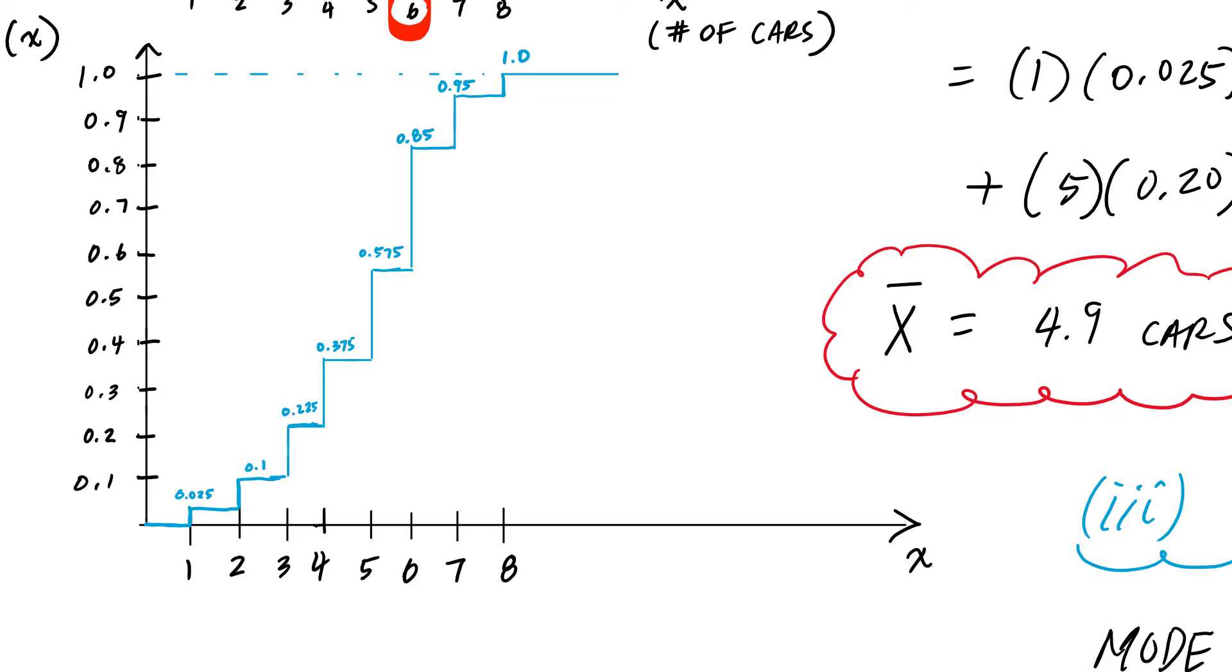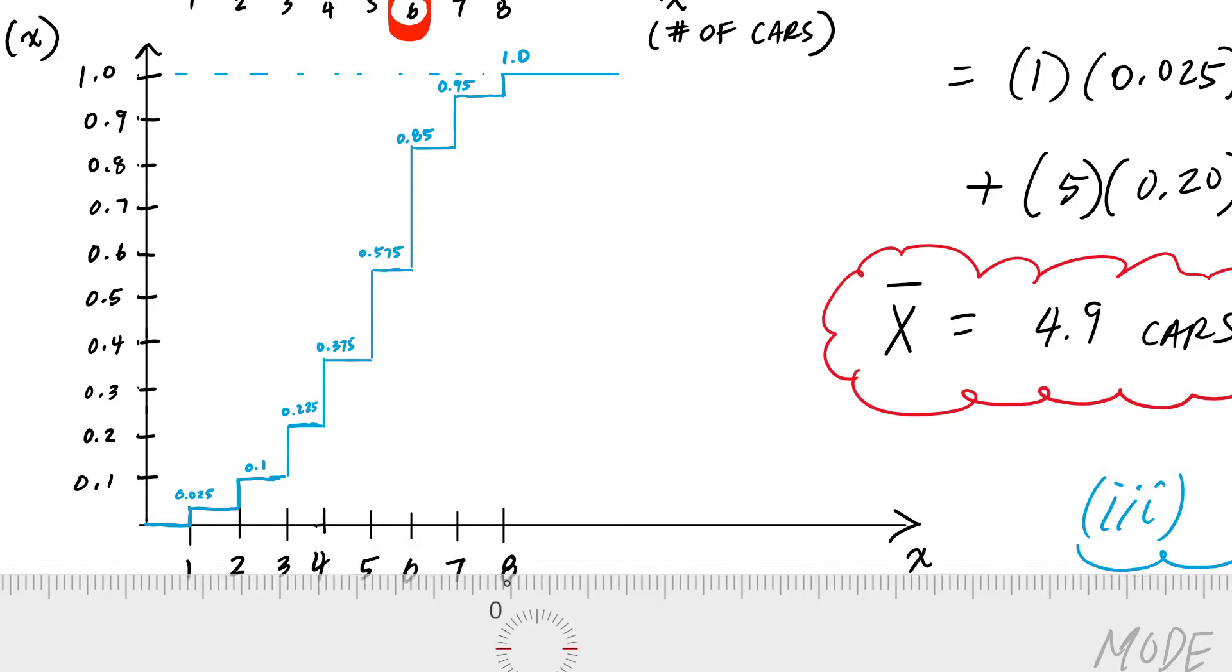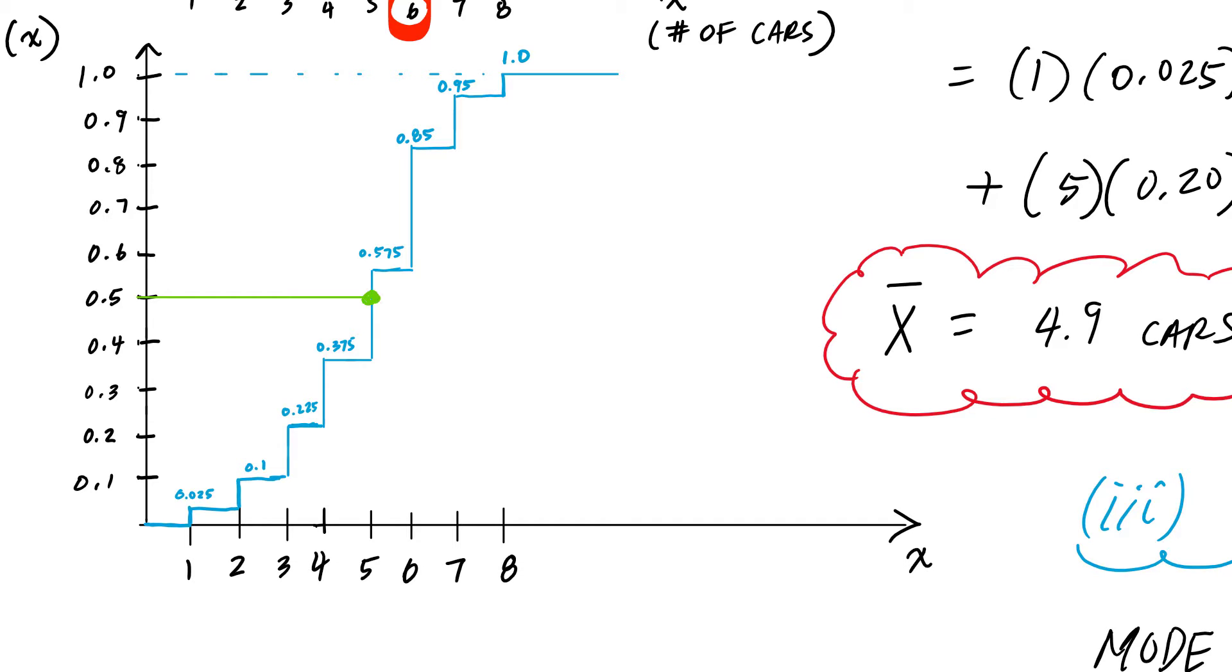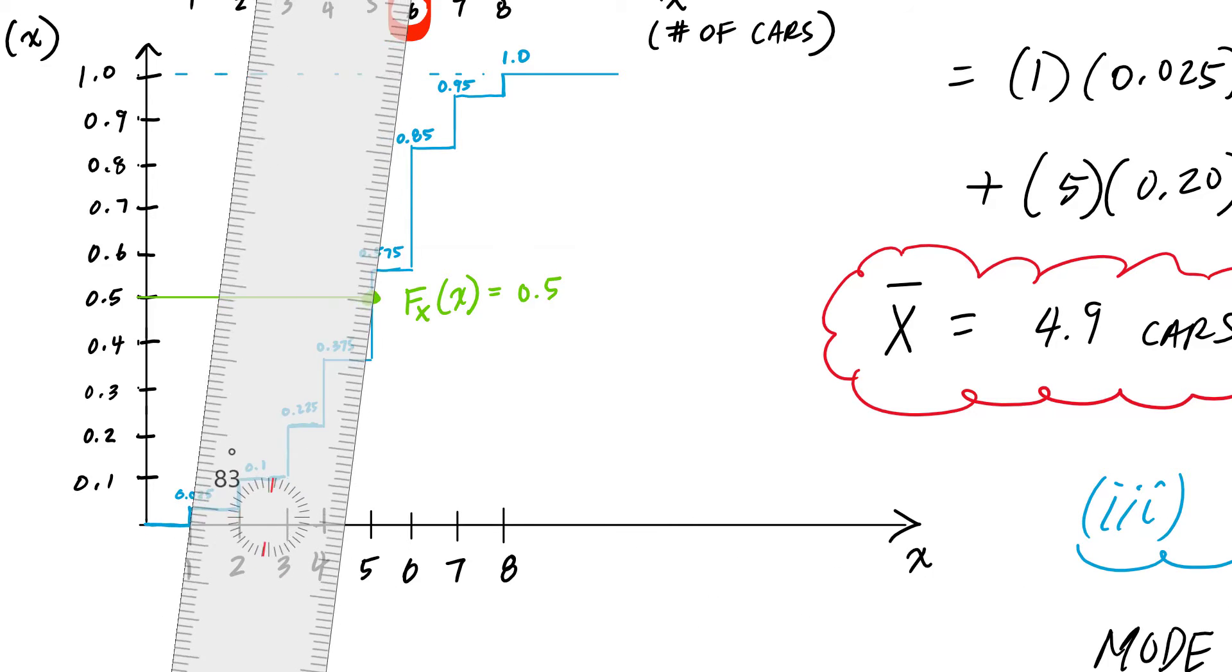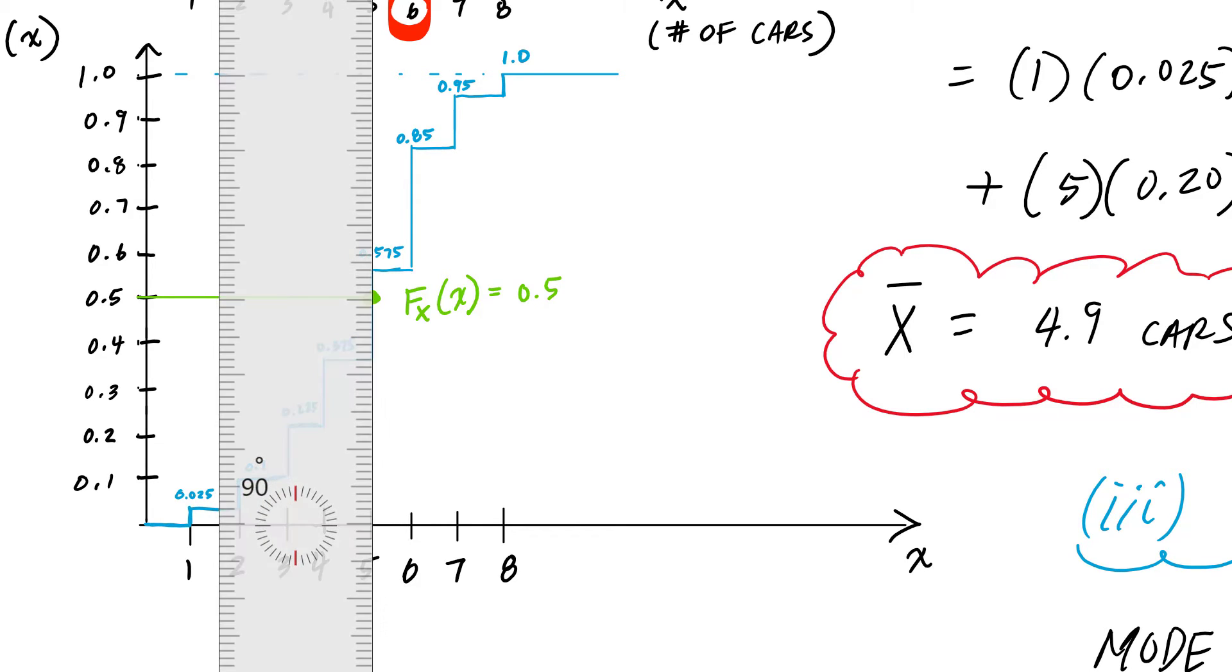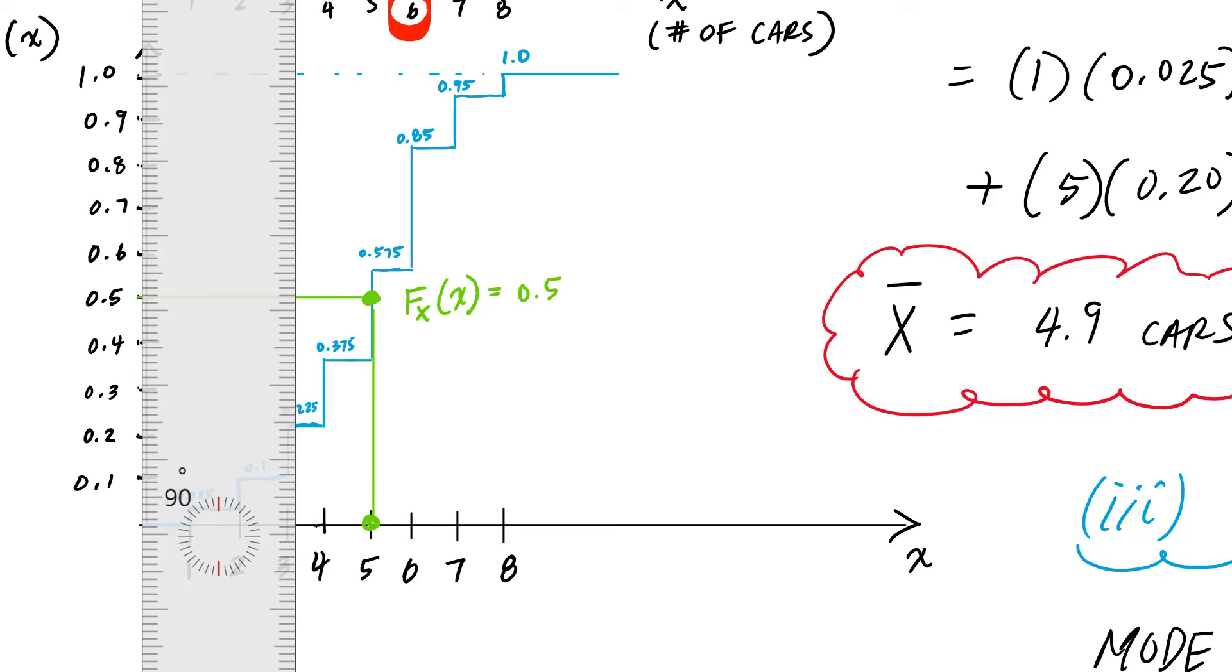This is F_X of x equal to 0.5, and the outcome associated with that, if I go straight down, is obviously 5. So this value right here, this x_50 or the 50th percentile, is 5 at 0.5.